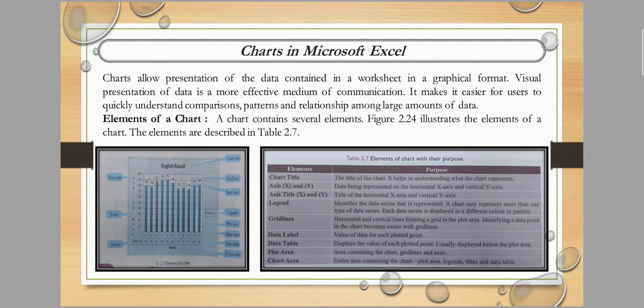Now let's look at the elements of charts. A chart contains several elements. The elements are: X axis title, Y axis title, chart title, grid lines, data label, legend, plot area, chart area, and data table. These are the main components of a chart.